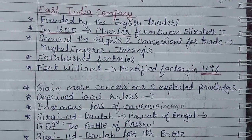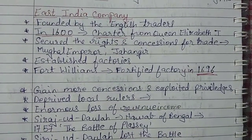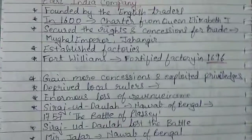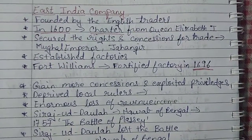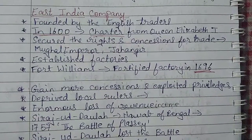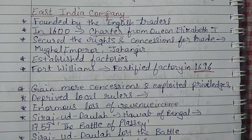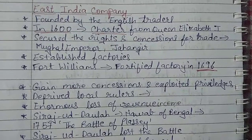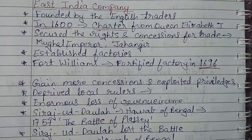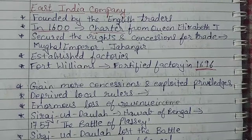We have seen how the East India Company was founded by the English or British traders in 1600. They formed this company with the help of permission taken from Queen Elizabeth I, who was the ruler of England at that time. They also secured the rights and concessions for trade from Mughal Emperor Jahangir, who was the emperor of India at that time, and with the help of these rights they established many factories at different places.